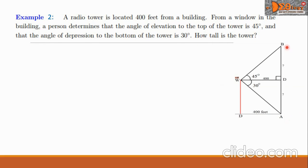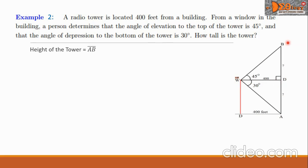We have this figure to help us solve the problem. We let line AB be the radio tower, where A is the base and B is the top. We let W be the window in the building, then we draw a line WD perpendicular to AB. The height of the tower is AB, and AB is equal to AD plus BD.